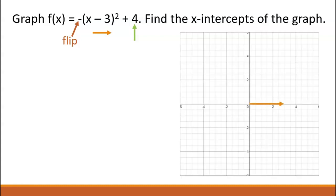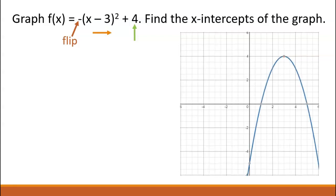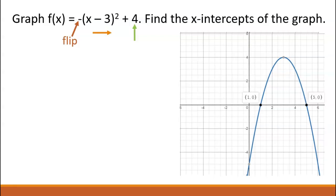Second, graph the vertex: 3 to the right and 4 up puts the vertex at (3, 4). Third, graph the parabola. Since this parabola is flipped, it opens downwards. Now that we have the graph, we can find the x-intercepts, which are at (1, 0) and (5, 0).